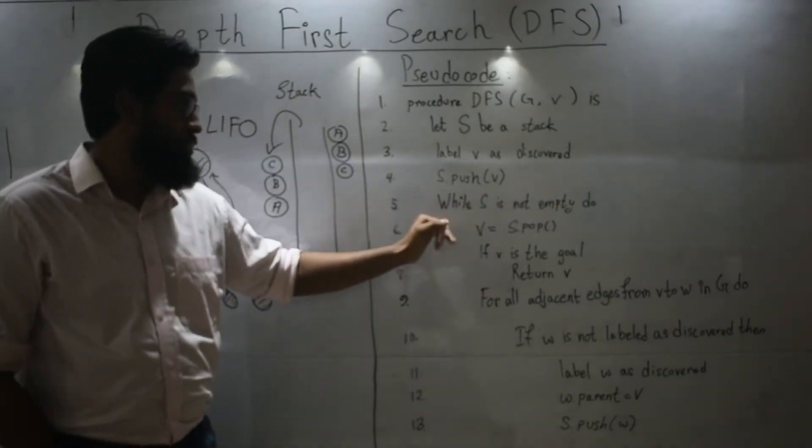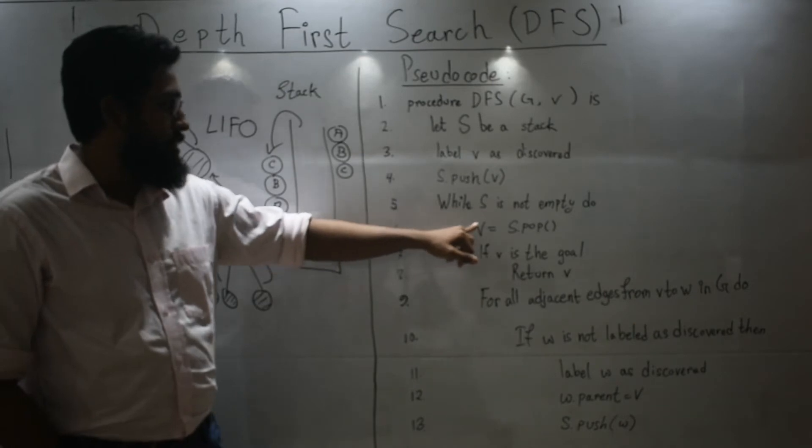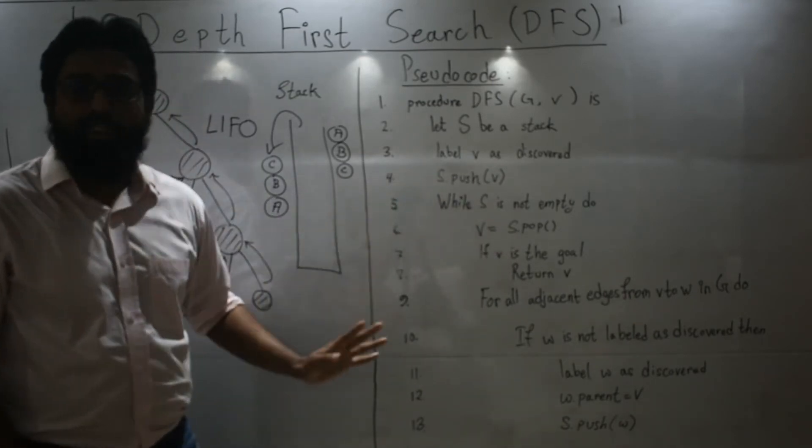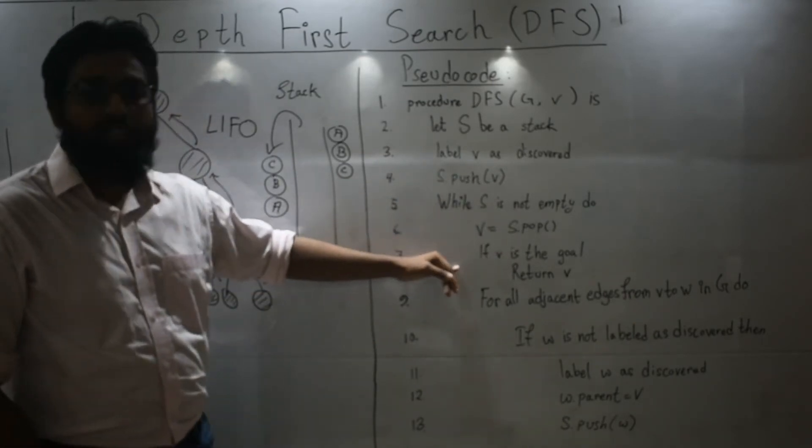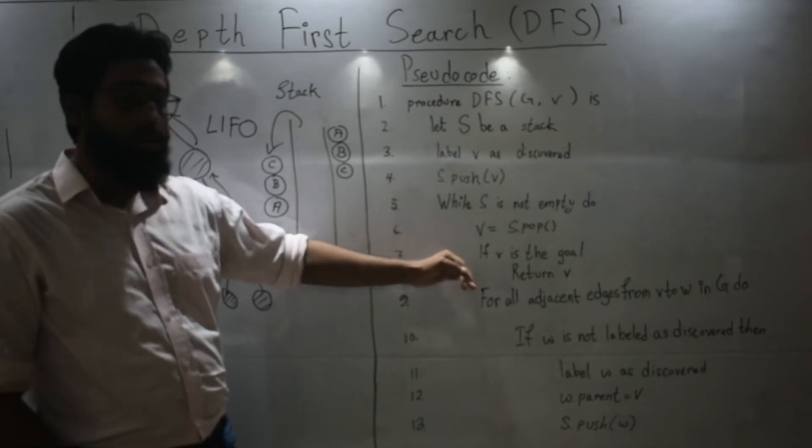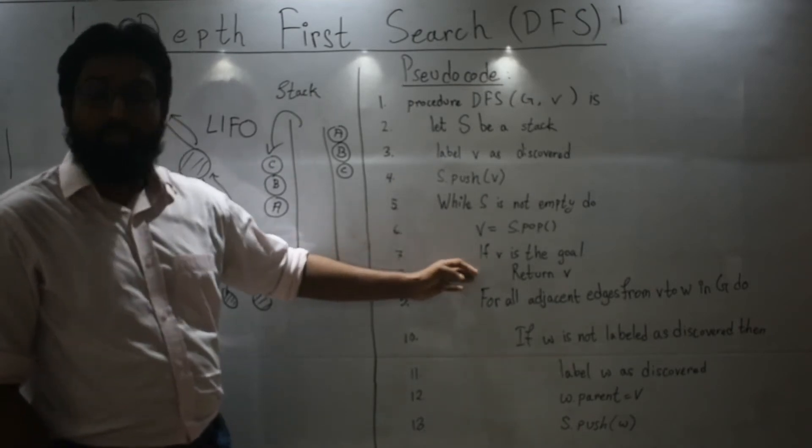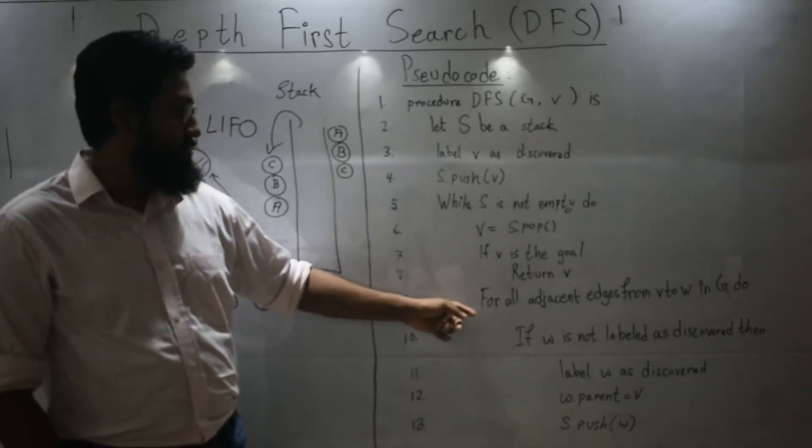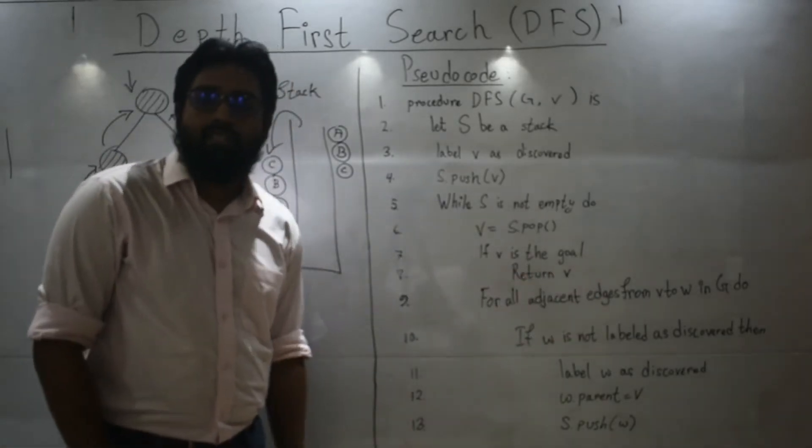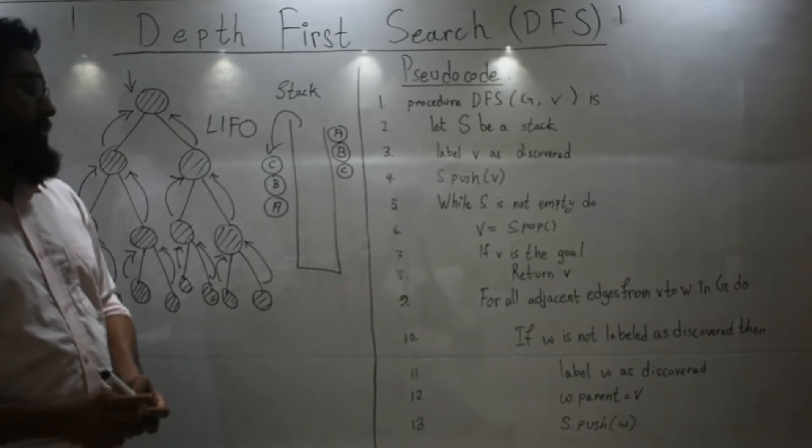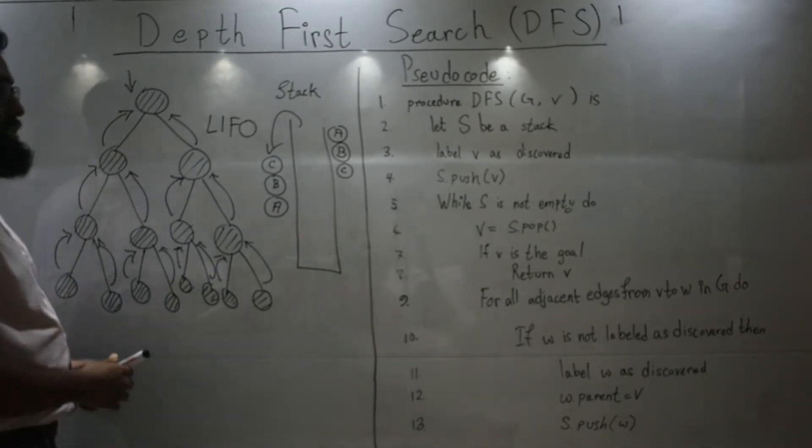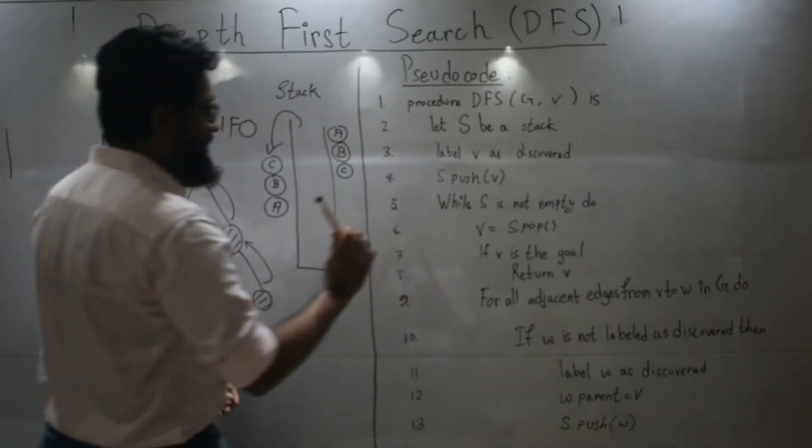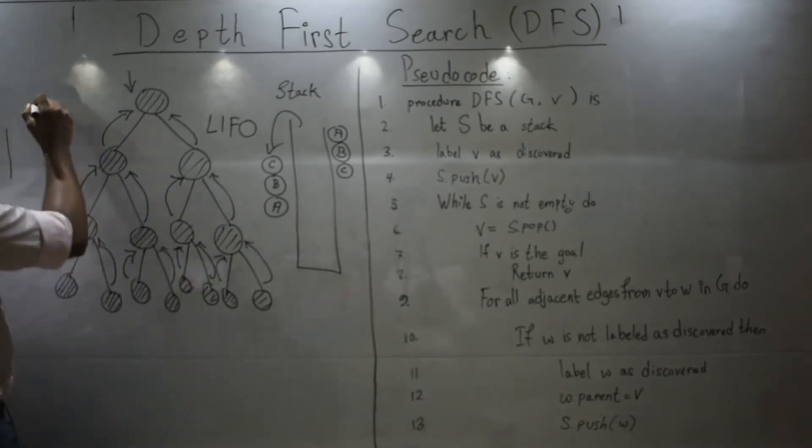While the stack is not empty, you do some work. What do you do? You pop from the stack. Put it in a variable V. And if that's the goal node or goal, you return it. Or else for all adjacent edges from V to W in G, in the graph G. So what does V to W mean? Let's look over here. If one of my node is V and the other one is W,